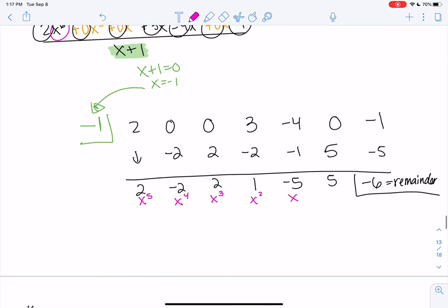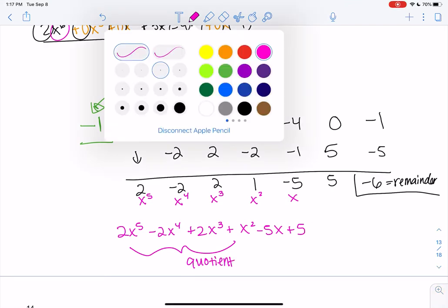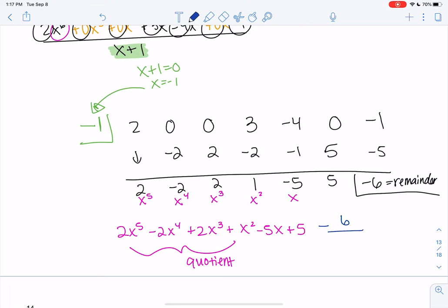So my quotient will be 2x to the 5th minus 2x to the 4th plus 2x cubed plus x squared, right? 1x squared is just x squared. Minus 5x plus 5. That's our quotient. And then minus the remainder over x plus 1. Well, plus the remainder, but the remainder has a negative sign.